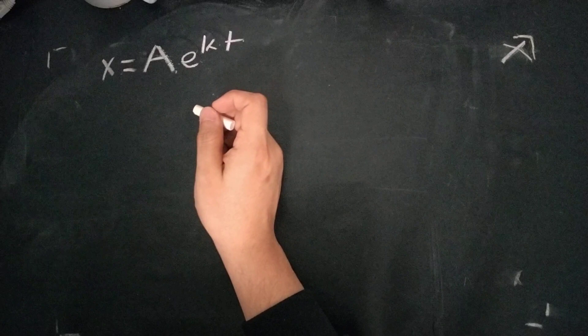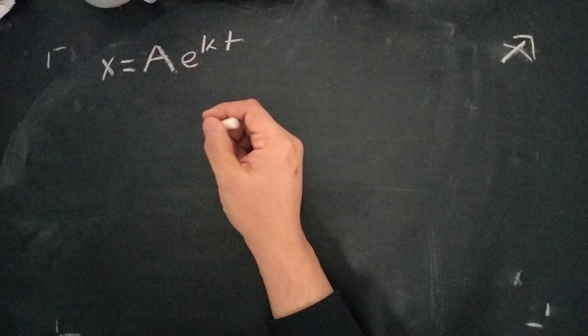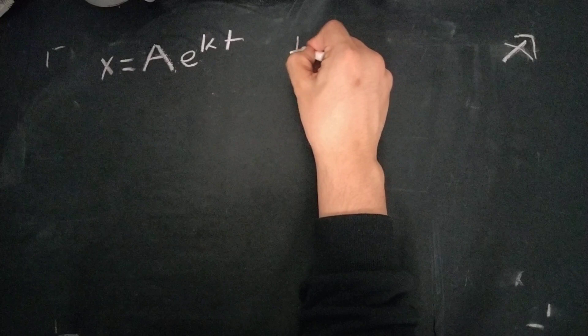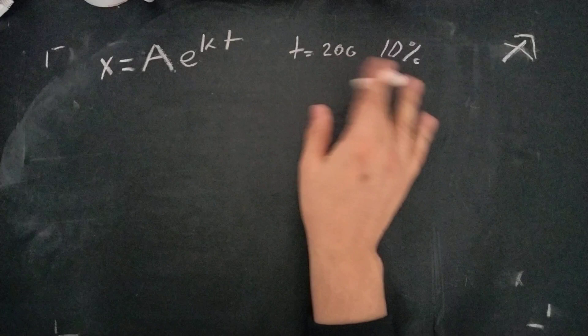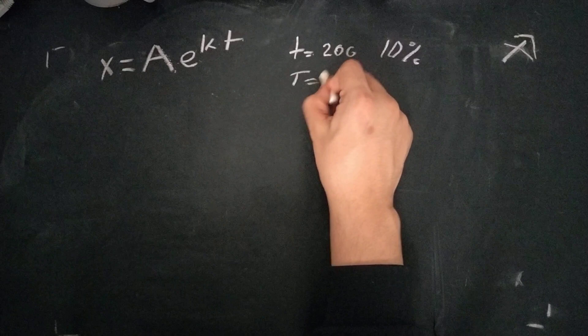And question number one goes as such. It says that a piece of lead decomposes at a rate proportional to the amount present. Here's what we see here. If 10% of the radium decomposes in 200 years, what percentage will be present after 1000. So we're given a few variables. We're given that T is equal to 200. We're left with 10% of what we have. And then we want to solve for T is equal to 1000.